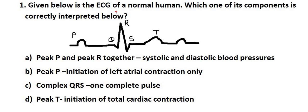Next question: given below is the ECG of a normal human — which one of its components is correctly interpreted? We have four statements and we need to determine which ECG interpretation is correct. First, we need to know how to read an ECG.